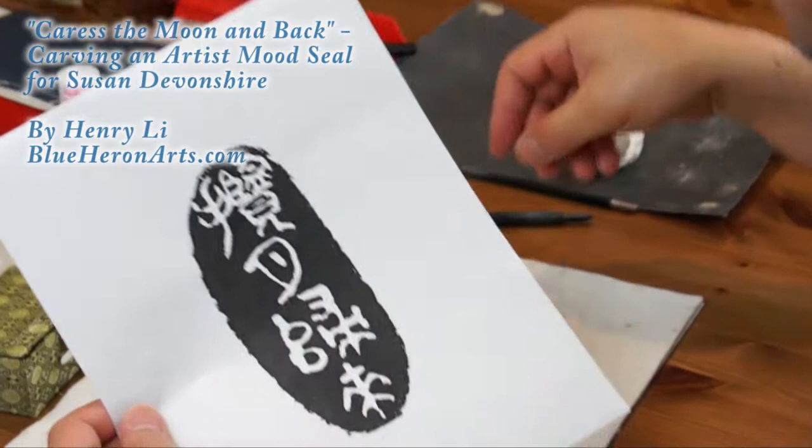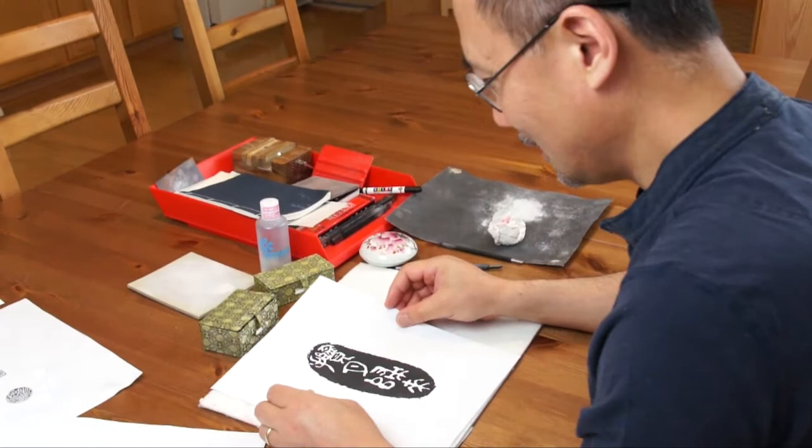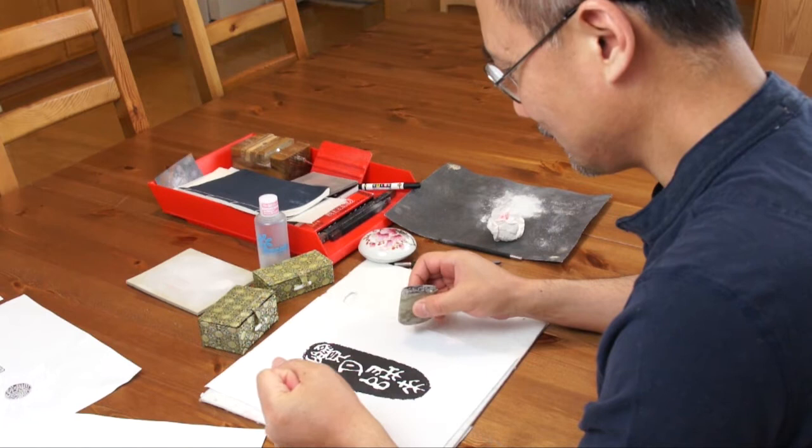月归来, 来 means carrots, the moon, and return back. That's the mood of freedom, the kind of mood of an artist.